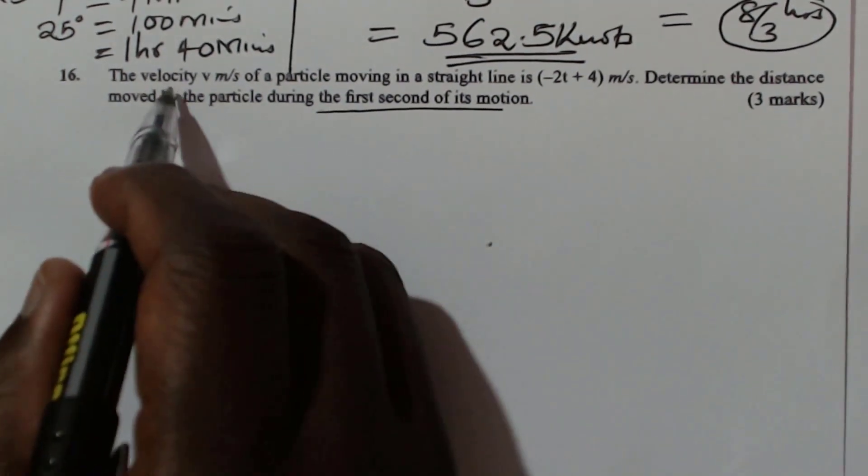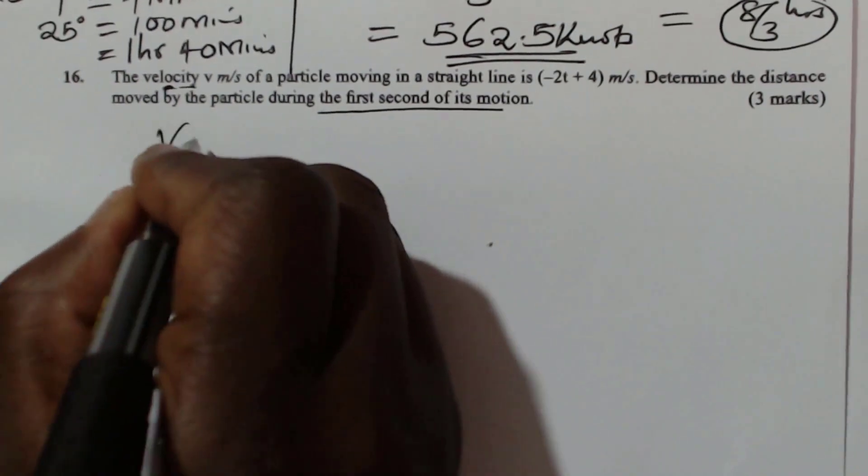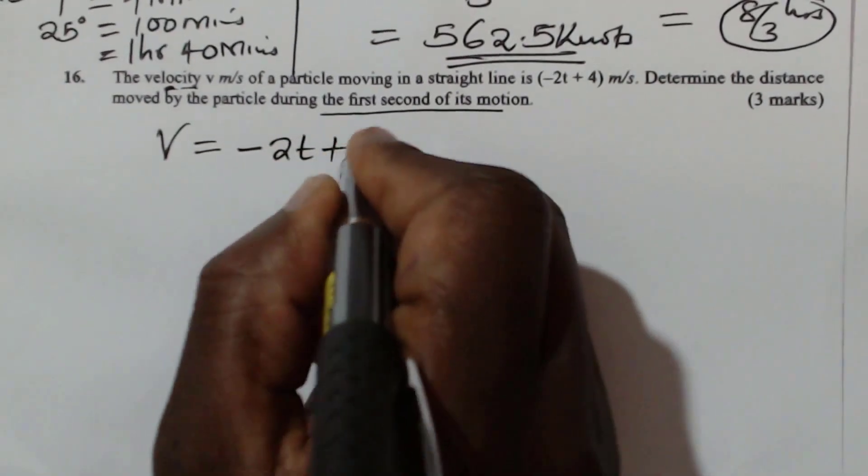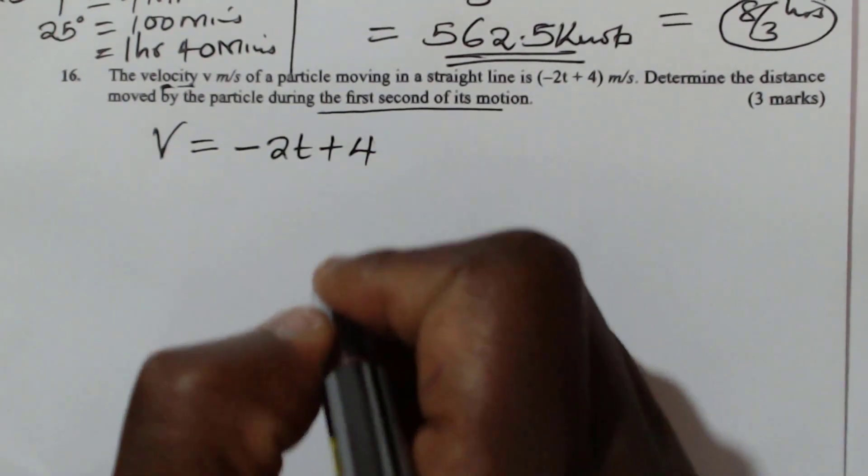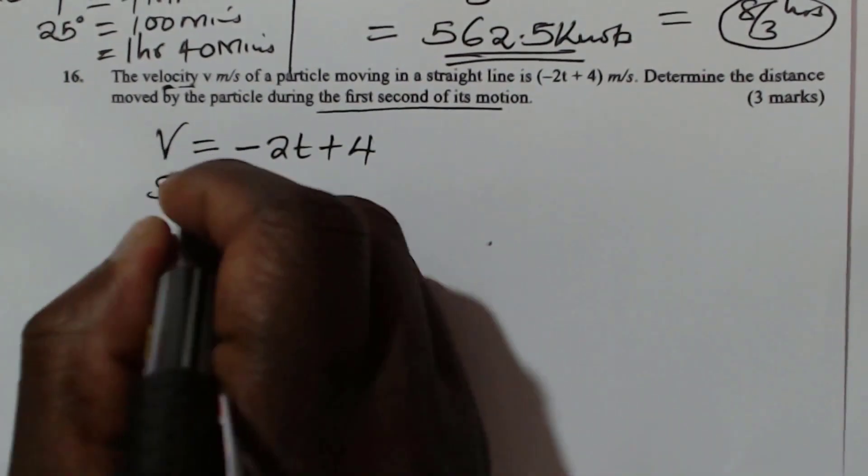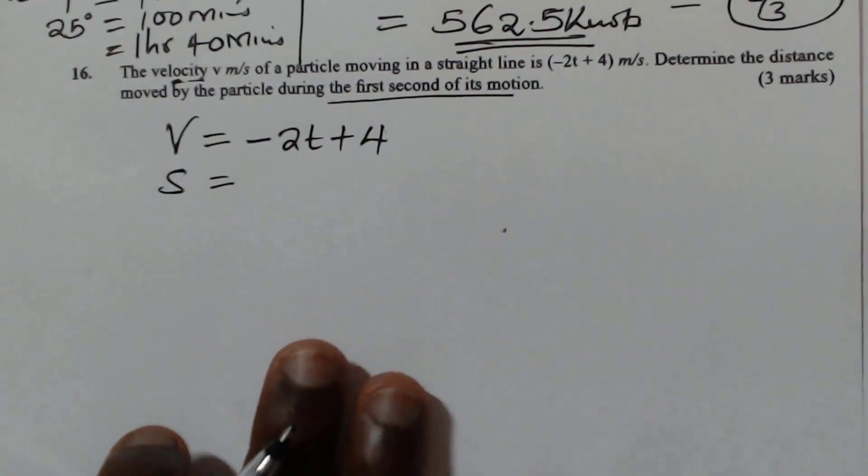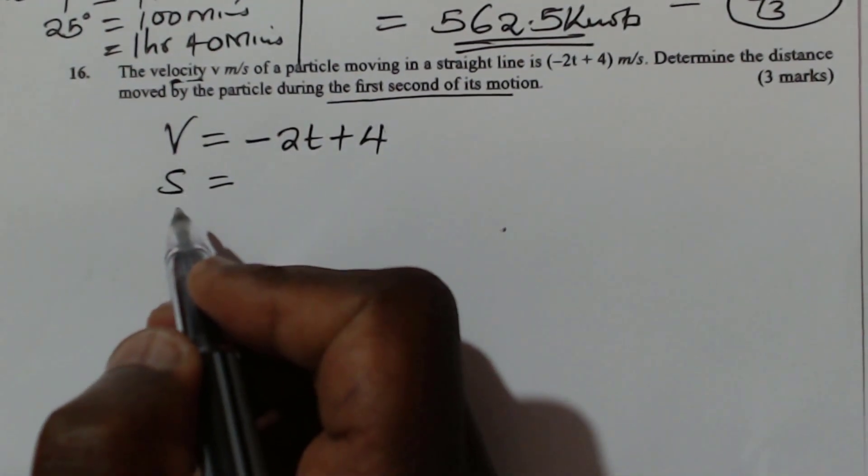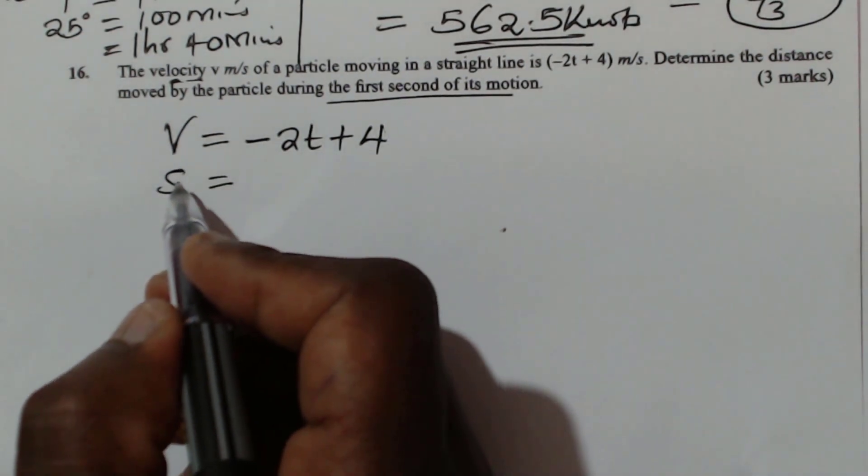So we're given the velocity. The velocity is negative 2t plus 4. And we're required to get the distance. So you need to be careful. Know what you're going to do. Given velocity, how do you get distance?